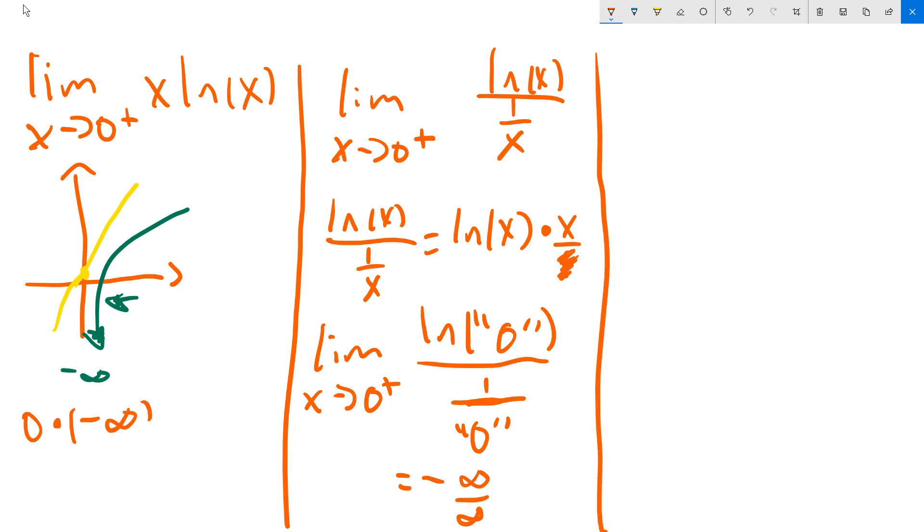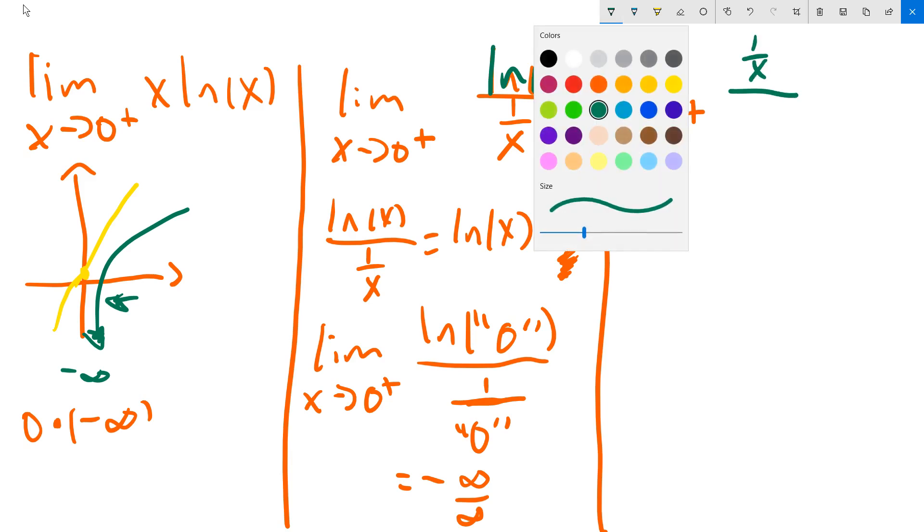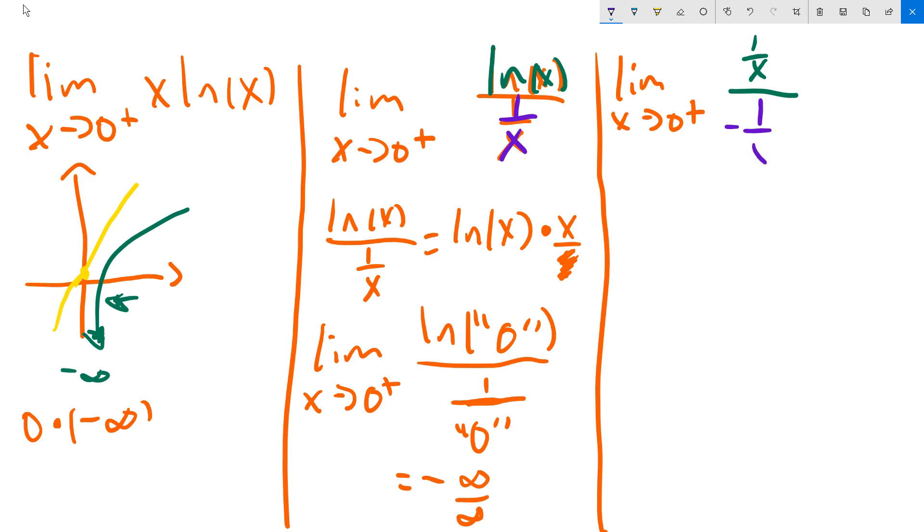So let's do L'Hôpital next. So L'Hôpital says limit as x approaches 0 from the right, and then you differentiate the top. So again, I'm going to color code here. So the top right now is ln(x). When you differentiate that using L'Hôpital, it gives you 1 over x. And then the bottom there will be a different function. So imagine it's 1 over x. When you differentiate the 1 over x portion, it becomes negative 1 over x squared.